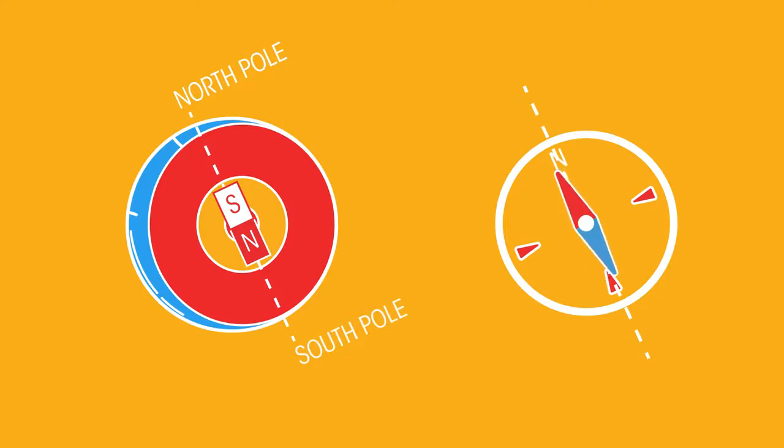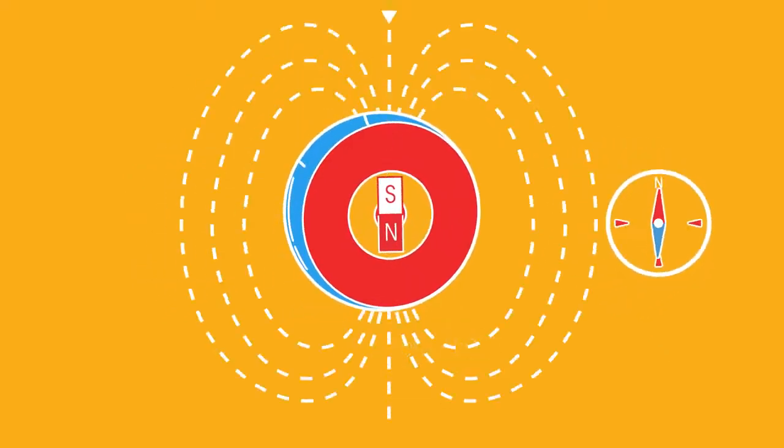Now this is a rather confusing part. The north pole, geographically as we think about it, is actually a south magnetic pole. But all you really need to know is that the Earth is a giant magnet, which is why we can use compasses to show us which way north is.